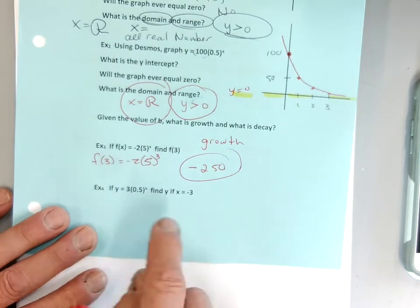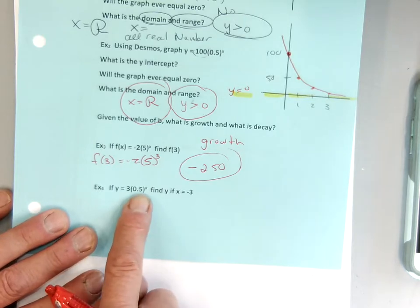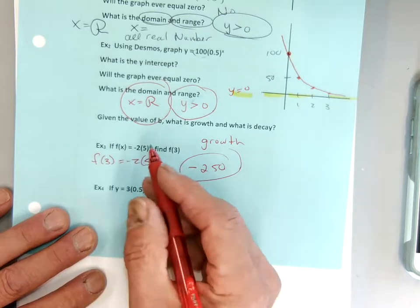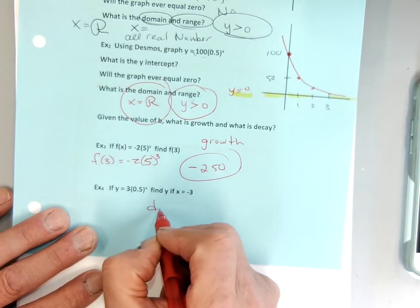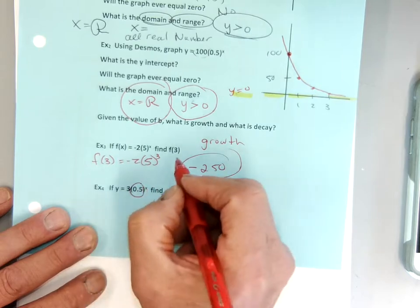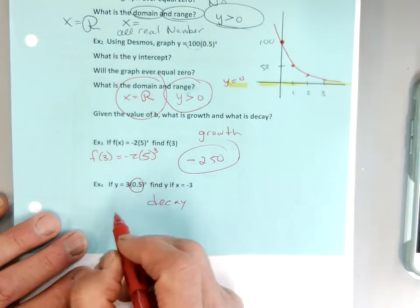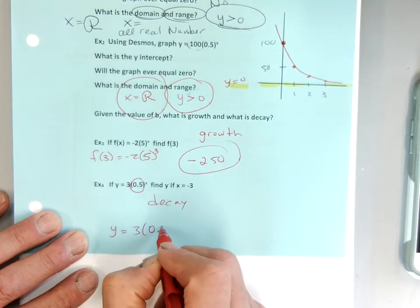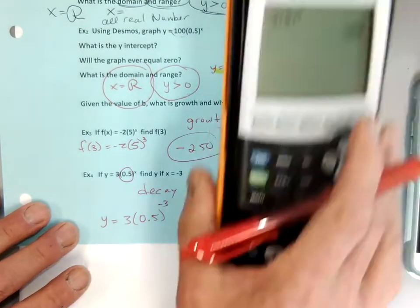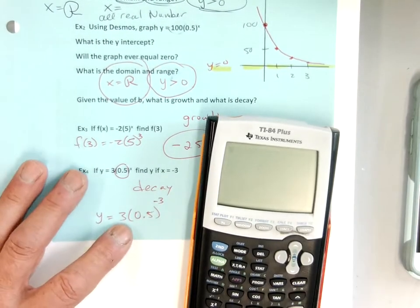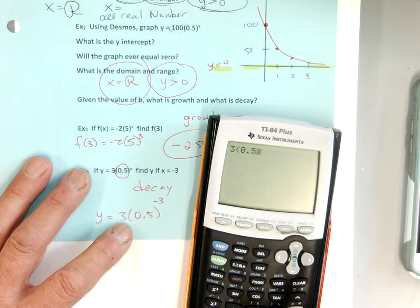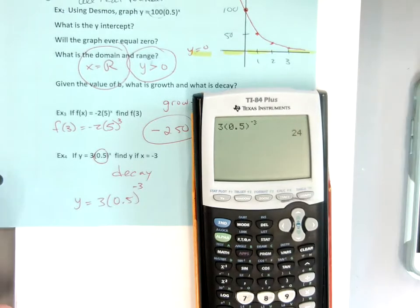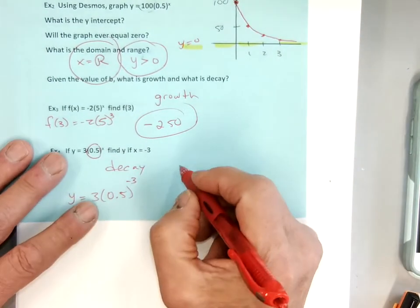Is example four growth or decay? I'm taking half of it — 0.5 — so it's decay, because of that base. Let's plug in negative 3: y equals 3 times 0.5 to the negative 3 power. Using my calculator — 3 times 0.5 to the power of negative 3 — I get 24.